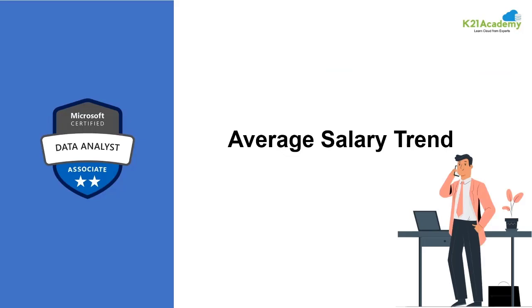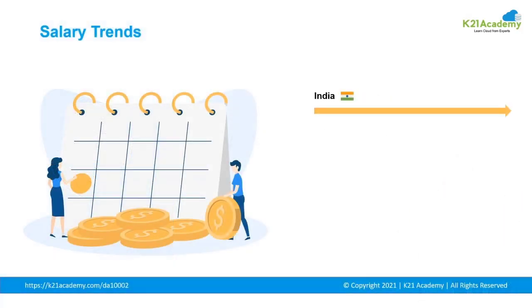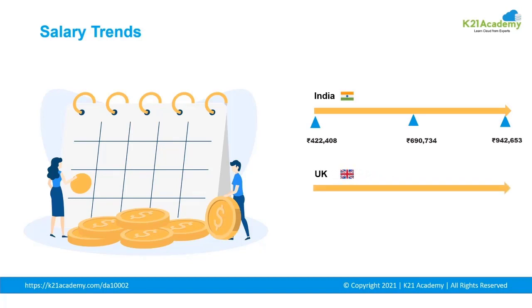Now let's discuss the average salary of a Power BI data analyst. Looking at figures in India, data analysts starting their career will get on average 422,000 rupees per annum. As they grow their skills and reach mid-level, they will get on average 690,000 rupees per annum. A person with full-grown experience will get around 942,000 rupees per annum. In the United Kingdom, at entry level, data analysts will earn around 27,000 pounds per annum, at mid-level around 31,000 pounds per annum, and with full experience around 34,000 pounds per annum. Whether fresher or experienced, Power BI data analysts attract lucrative packages. If you have the right skill, are certified, trained, and good at what you do, you will get plenty.